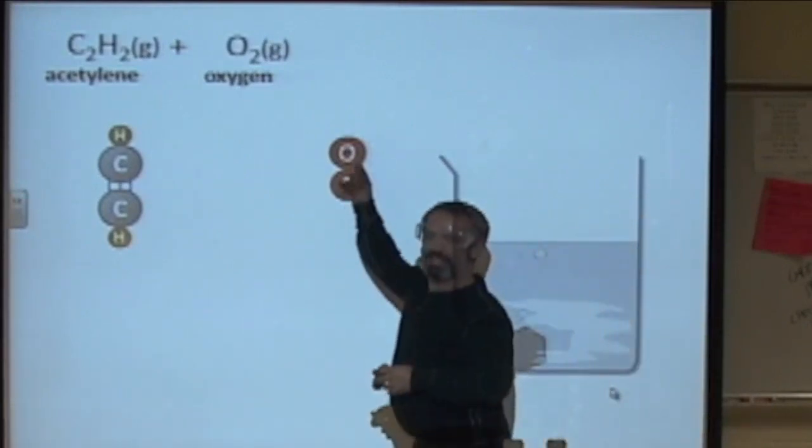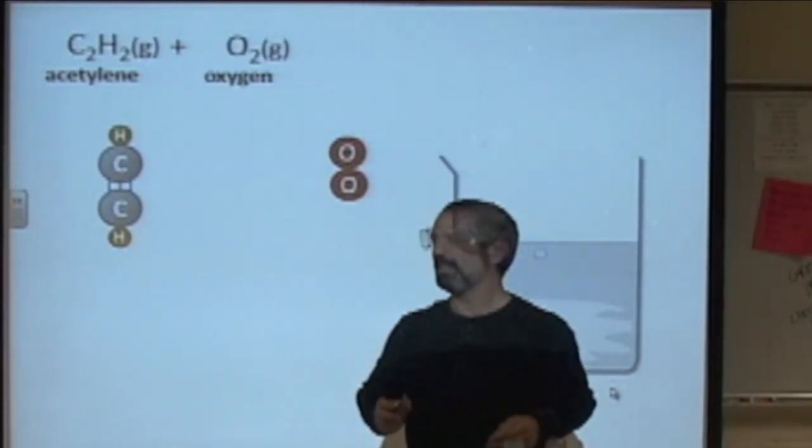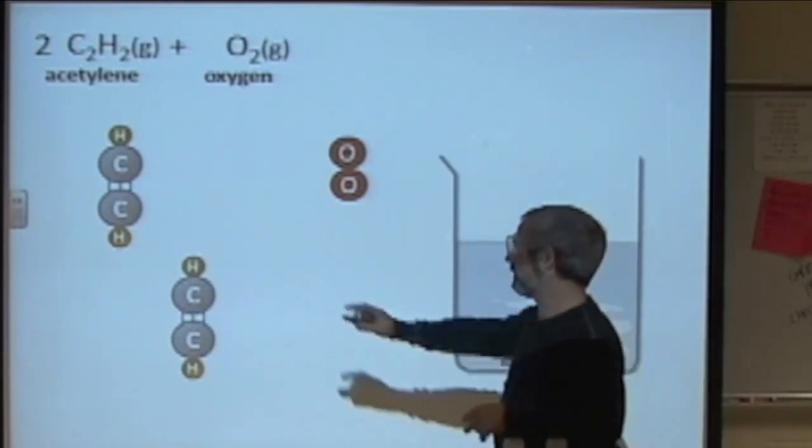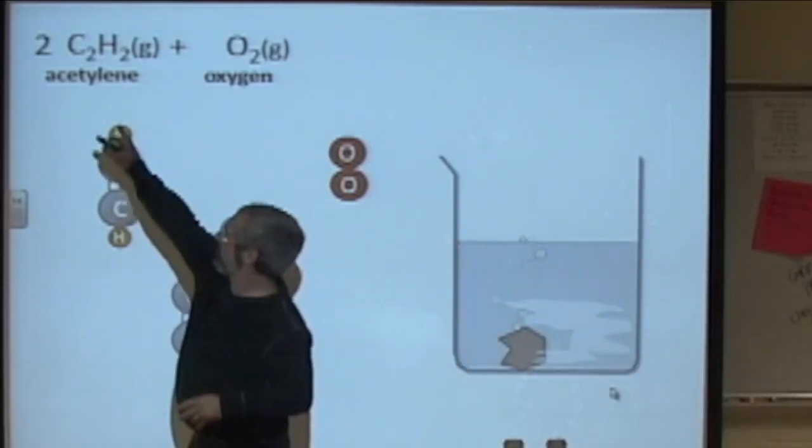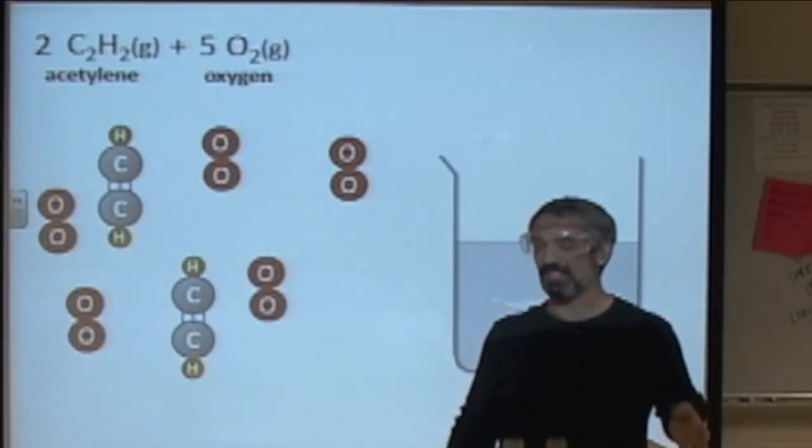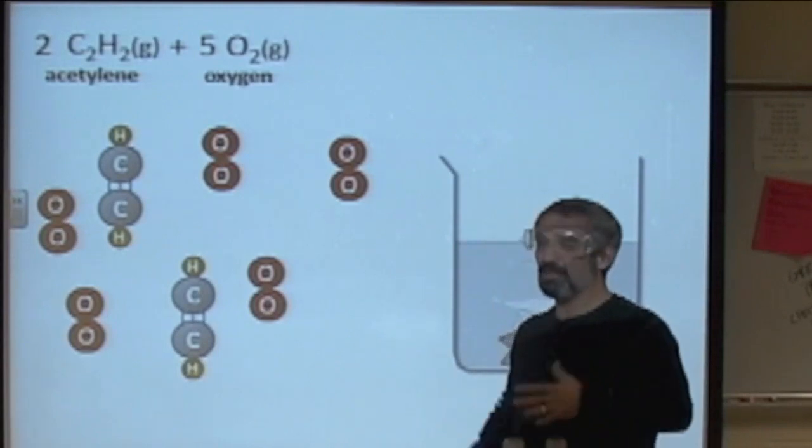Remember, oxygen is diatomic, two O's. Well, to get this one to balance like the previous one, I'll need two acetylene molecules. So I've got that and I've got two written up there, that's what that means. And I'll need a total of five oxygen. This is a much more complicated reaction in terms of balancing it.